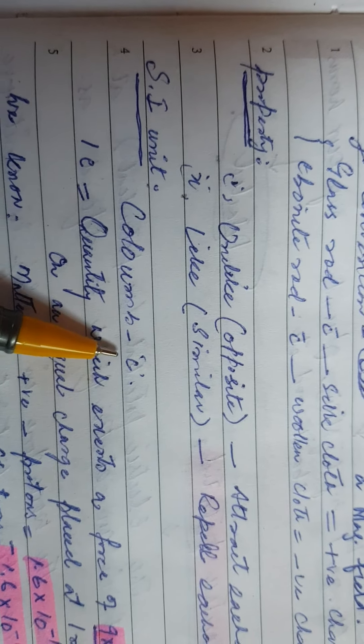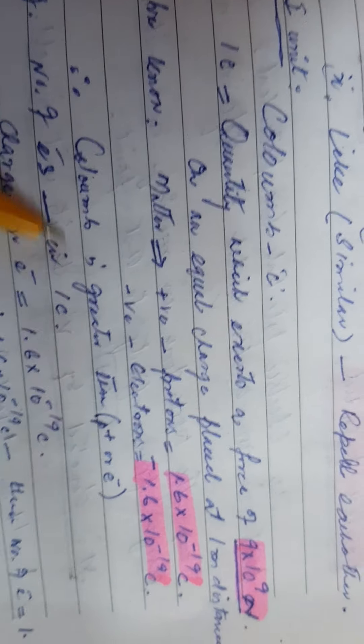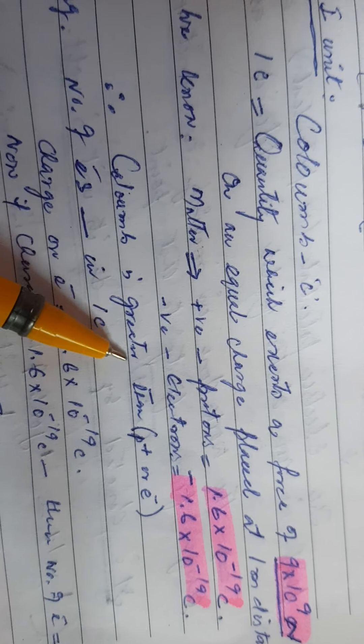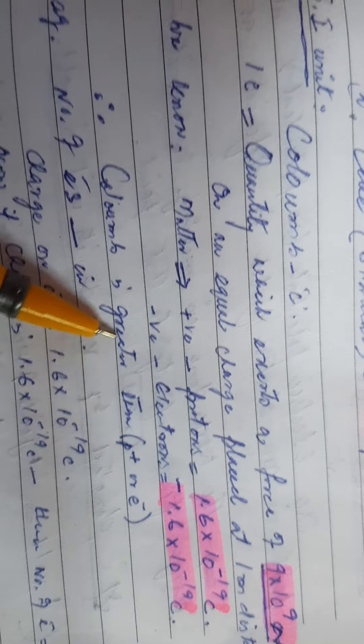One coulomb is that quantity of charge which exerts a force of nine into ten raised to power nine newtons on an equal charge placed at one meter distance. Protons carry positive charge and electrons carry negative charge. The value of charge on each is 1.6 into ten raised to power minus 19 coulombs — positive for proton and minus 1.6 into ten raised to power minus 19 coulombs for the electron.